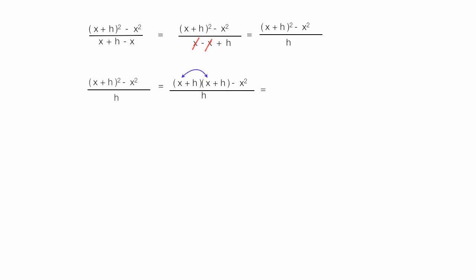So x times x is x squared. I'll write that. Plus x times h, which is plus xh. Then now I have x times h again for another xh.